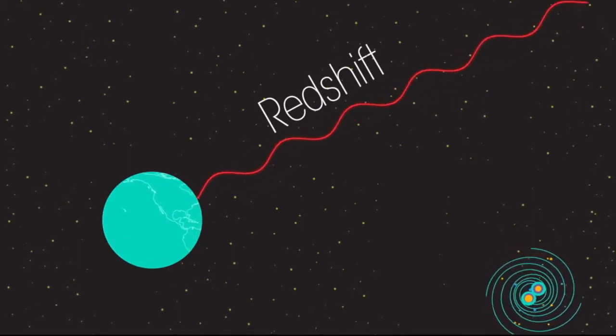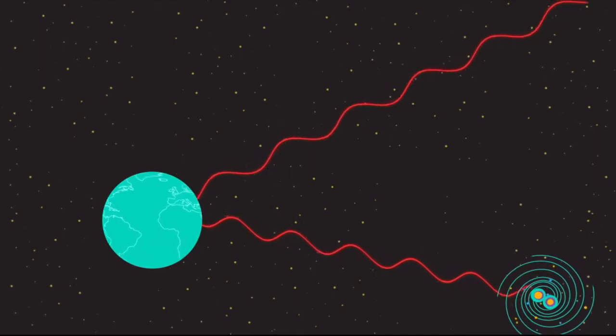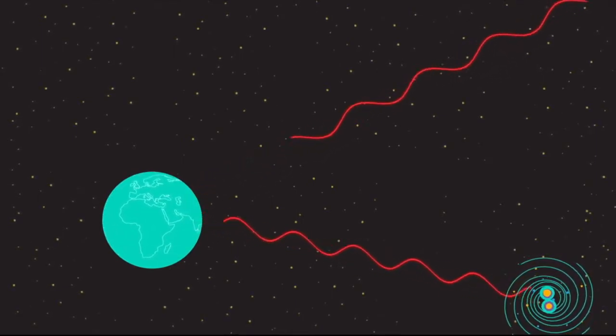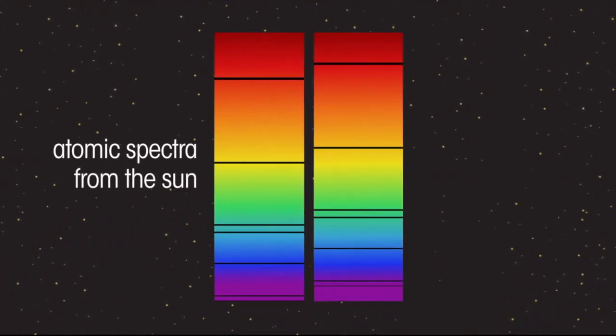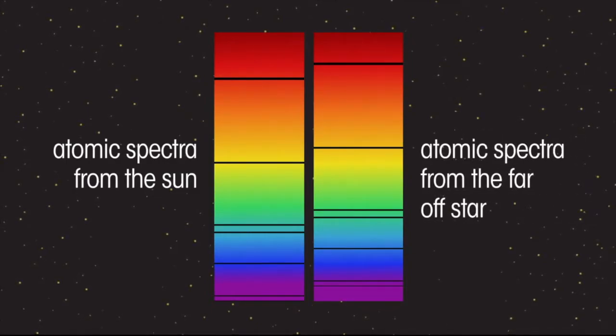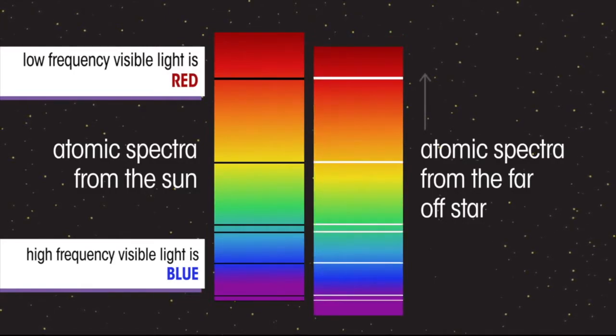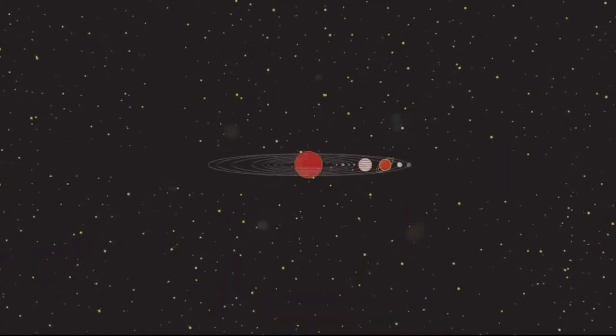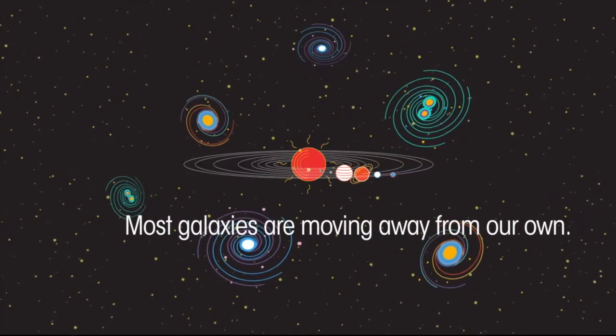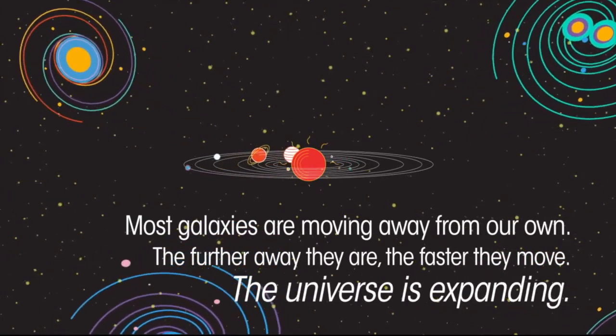Hubble noticed that most of the galaxy's light was shifted towards the red end of the spectrum. And also, the further away a galaxy was, the more its light was red shifted. Look at these two atomic spectra, one from our sun and the other from a distant star. Remember, low frequency visible light is red and high frequency visible light is blue. The lines in the spectra are the same pattern, but they have been shifted to the red end of the spectrum of the distant star. Hubble concluded that most galaxies were moving away from our own. The further away a galaxy was, the faster it was moving away from us, and the universe is expanding.